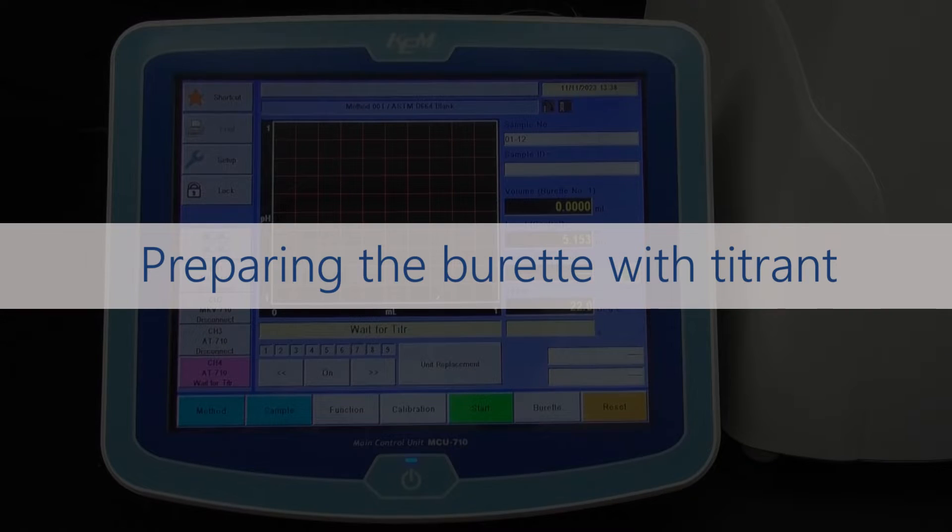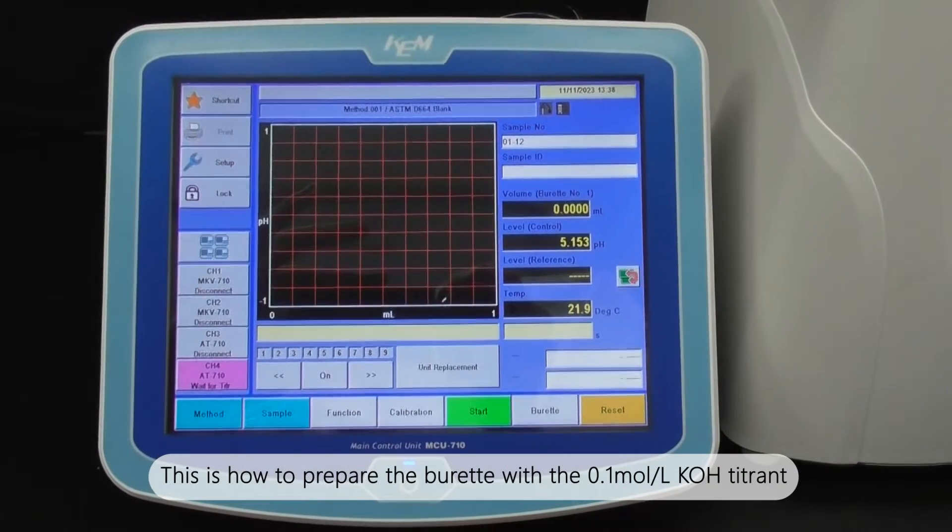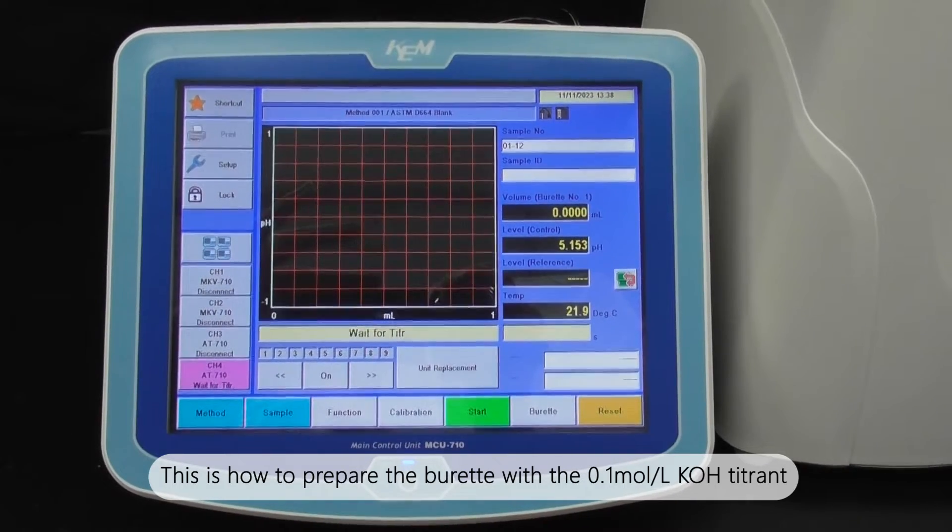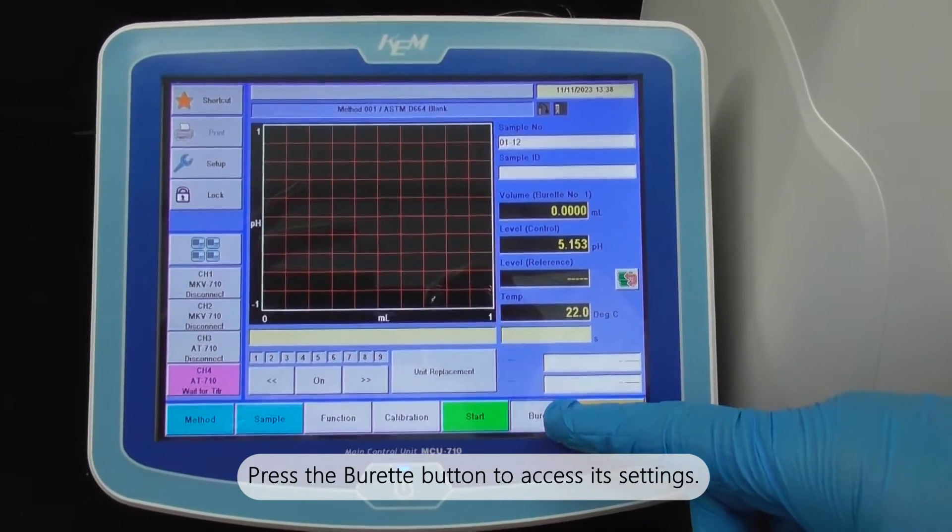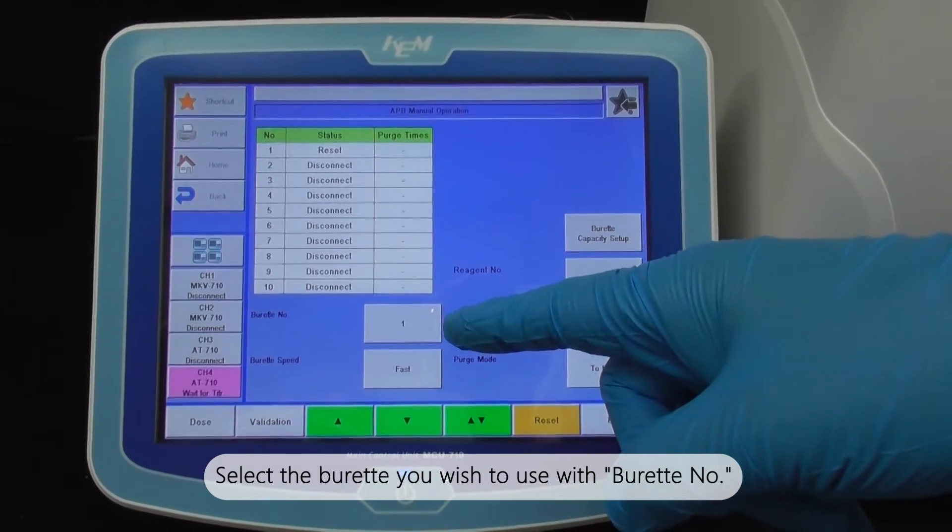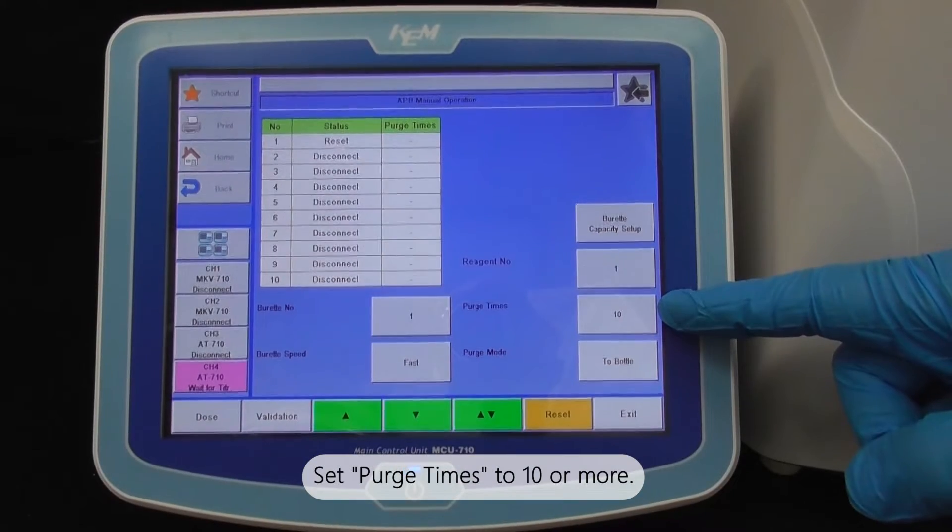Preparing the burette with titrant: This is how to prepare the burette with the 0.1 mol per liter potassium hydroxide titrant. Press the burette button to access the settings. Select the burette you wish to use with burette number. Set purge times to 10 or more.